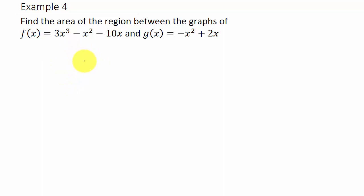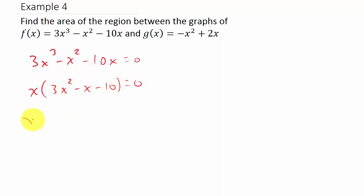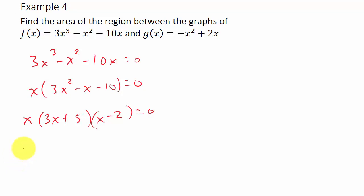A quicker way is to take 3x cubed minus x squared minus 10x, set it equal to 0, and factor out x to get x times (3x squared minus x minus 10) equals 0. This factors to give x equals 0, x equals negative 5 thirds, or x equals 2.